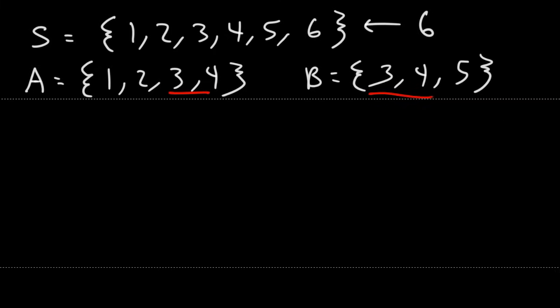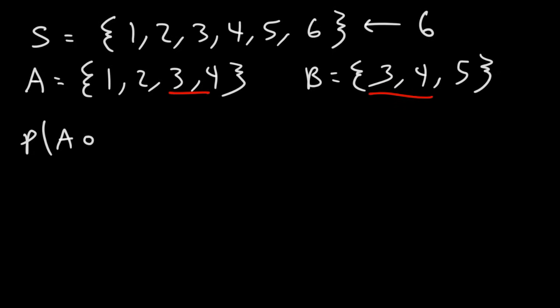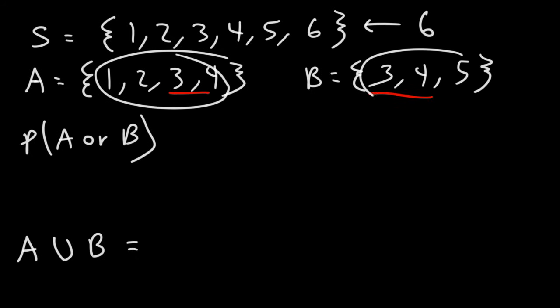Now, what about the probability of event A or event B occurring? What's the answer to that question? Let's write the sample space of A or B. So this is going to be the union of these two events. So basically, it's going to be all these numbers combined.